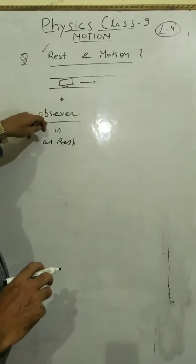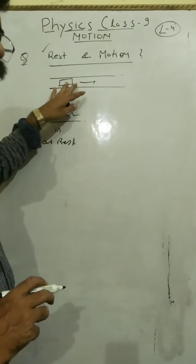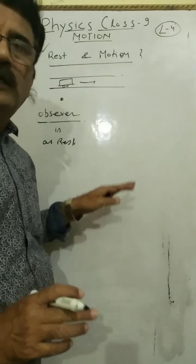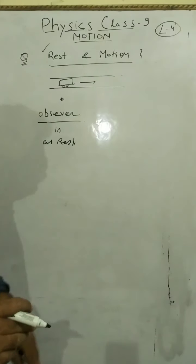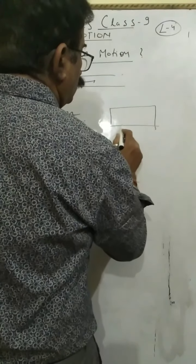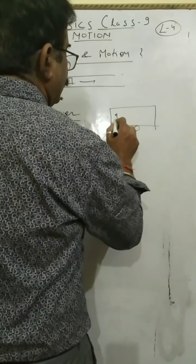Car is moving, it is in motion. So we can say rest and motion are relative terms. One another example: two persons are sitting here.